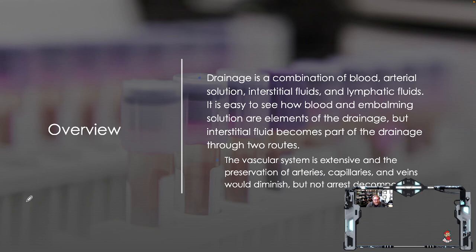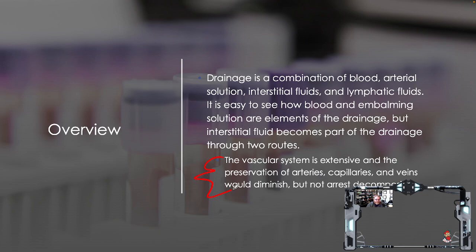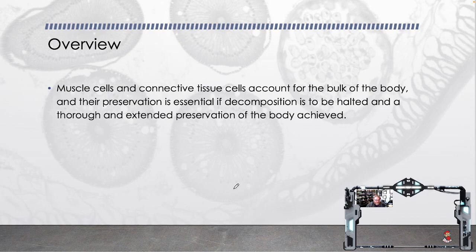Drainage is a combination of blood, arterial solution, interstitial fluids, and lymphatic fluids. Interstitial fluid becomes part of the drainage through two routes. The vascular system is extensive, and preservation of arteries, capillaries, and veins would diminish but not arrest decomposition. If we just got the solution into the capillaries, this would not be sufficient because the cells themselves would still break down and rot. Muscle cells and connective tissue account for the bulk of the body, and their preservation is essential if decomposition is to be halted and thorough preservation achieved.